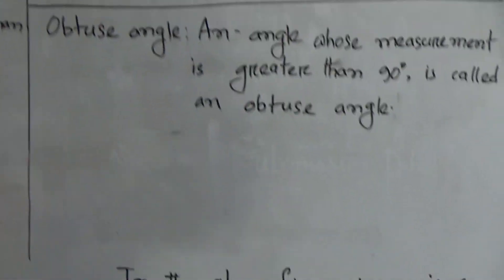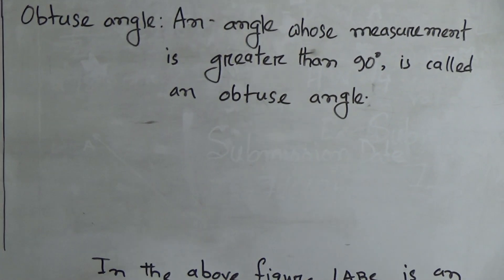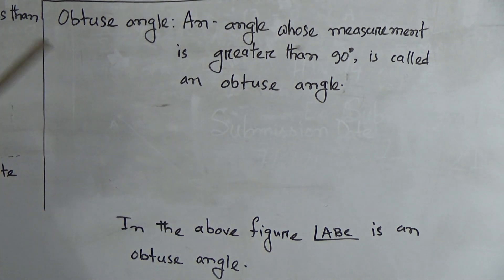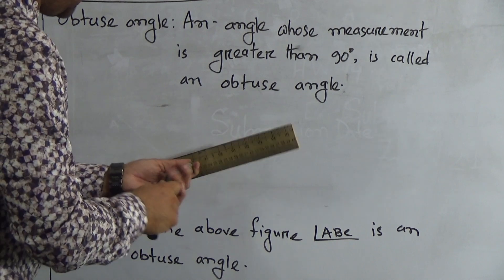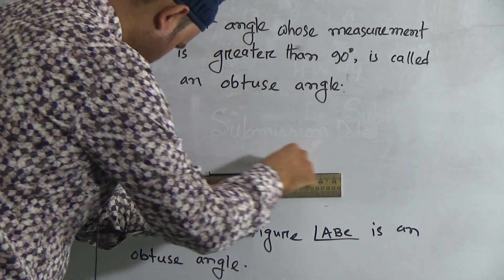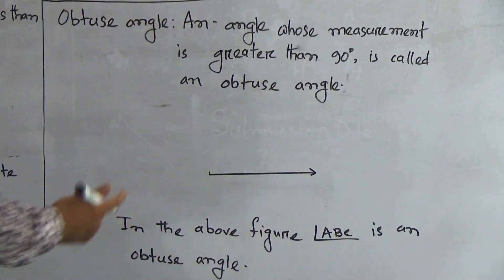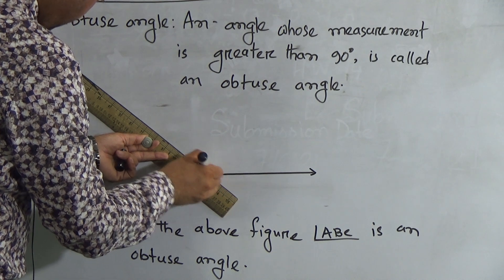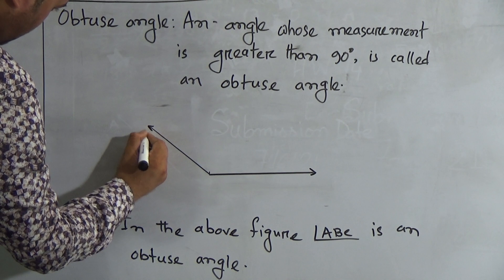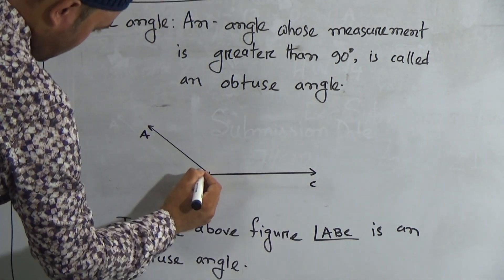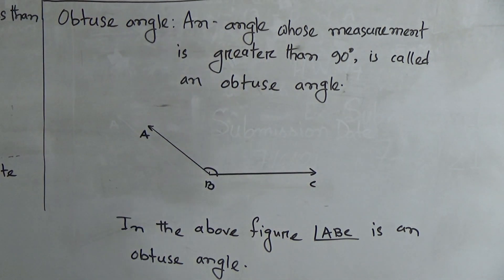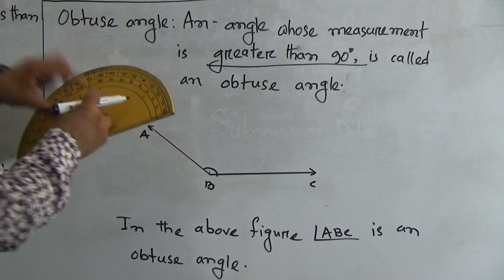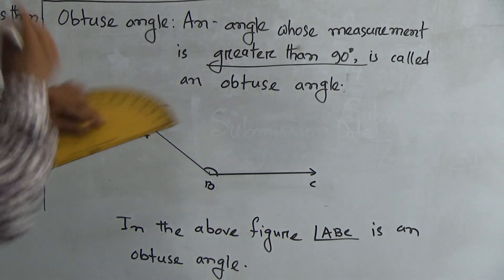Now go to the next one, which is obtuse angle. An angle whose measurement is greater than 90 degrees is called an obtuse angle. So to draw the obtuse angle, first of all draw a ray. We know that a ray has a starting point but no definite length. Then draw another ray this way and call it A, B, and C. So here angle ABC is an obtuse angle, meaning it is greater than 90 degrees. After using the protractor we can justify whether it is greater than or less than 90 degrees.